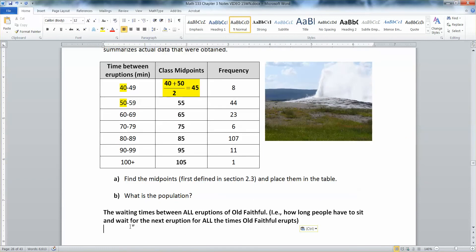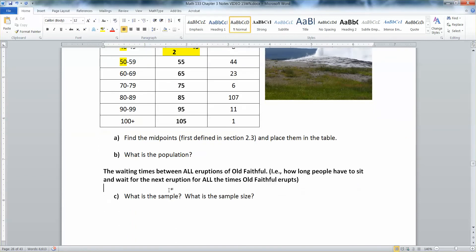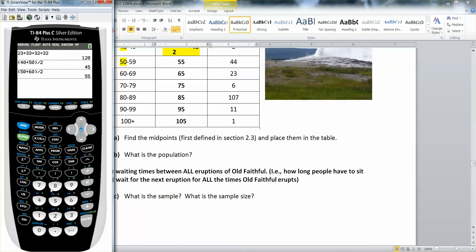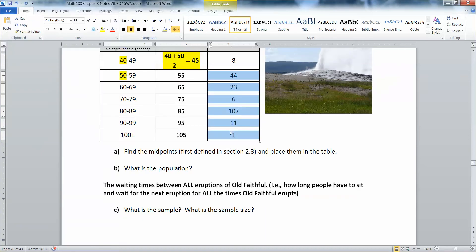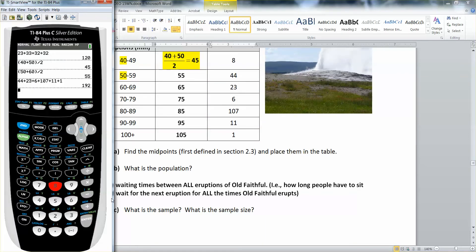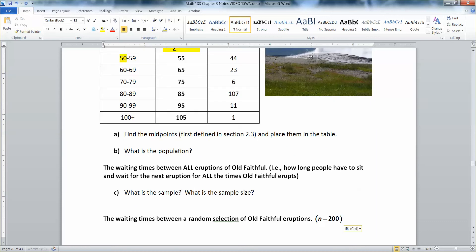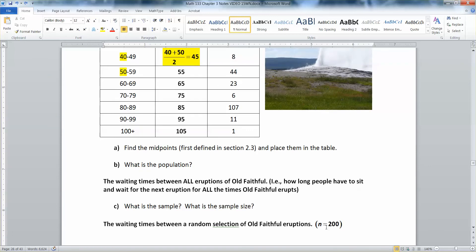So it's the waiting times between all eruptions. How long people have to sit around and wait. But the sample is the waiting times for our group of eruptions. So if we add up those numbers, I have 44 plus 23 plus 6, plus 8. That gets us 200. So our sample size is 200. It's the waiting times between a random sample of Old Faithful eruptions. That was our sample size. The symbol for that is little n. N equals sample size.